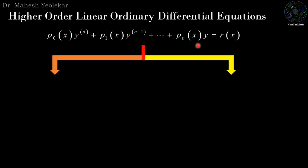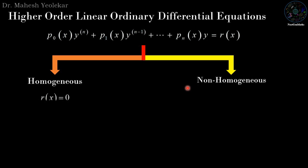This is further classified into two parts: homogeneous and non-homogeneous linear differential equations. Homogeneous means r(x) = 0, and non-homogeneous means r(x) ≠ 0. In physical terms, r(x) = 0 means no external force, and r(x) ≠ 0 means there is an external force — so the non-homogeneous system is sometimes called a forced system.